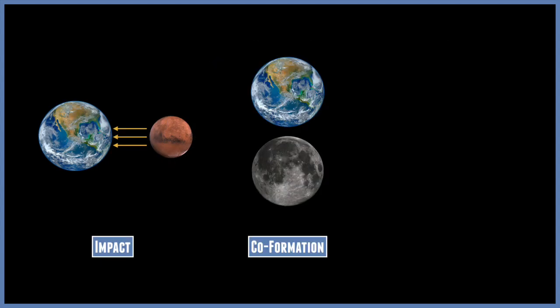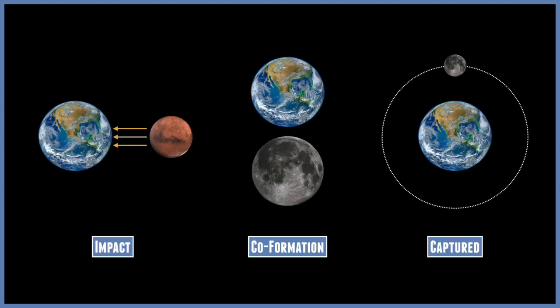There are basically three theories of how our planet's satellite came to be. There's the giant impact theory, a co-formation theory, and a capture theory. All these theories have scientific value to them. All of them make sense, and all of them match up with our observations and studies.